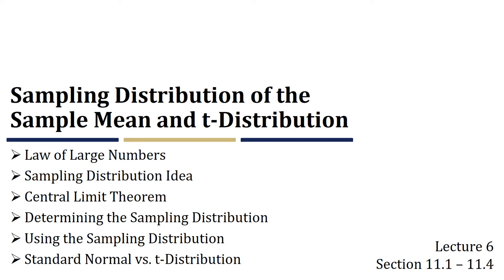We've already looked at the sampling distribution of the sample proportion, confidence intervals, and hypothesis tests for a single population proportion. In this lecture, we're going to look at the sampling distribution of the sample mean — how spread out sample means tend to be from one another. Then we'll take a quick look at the t-distribution, which is similar to the standard normal distribution but must be used when analyzing population means.